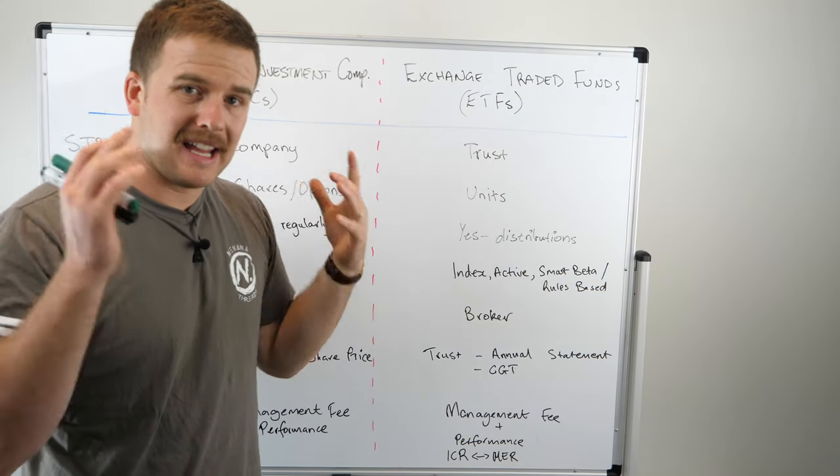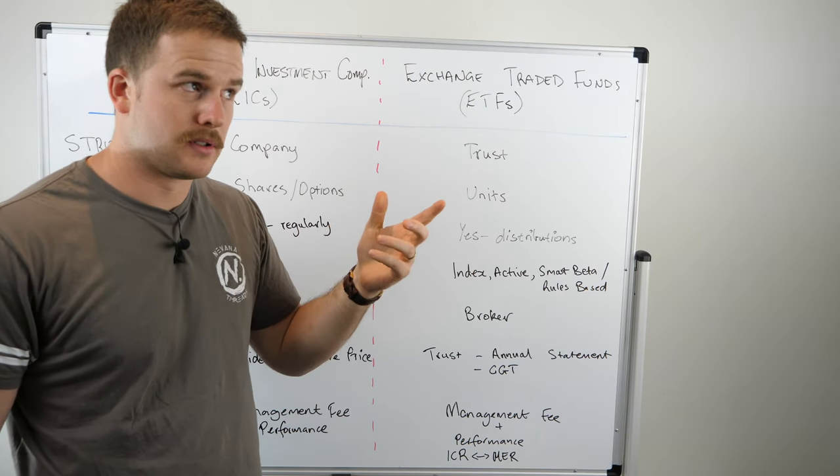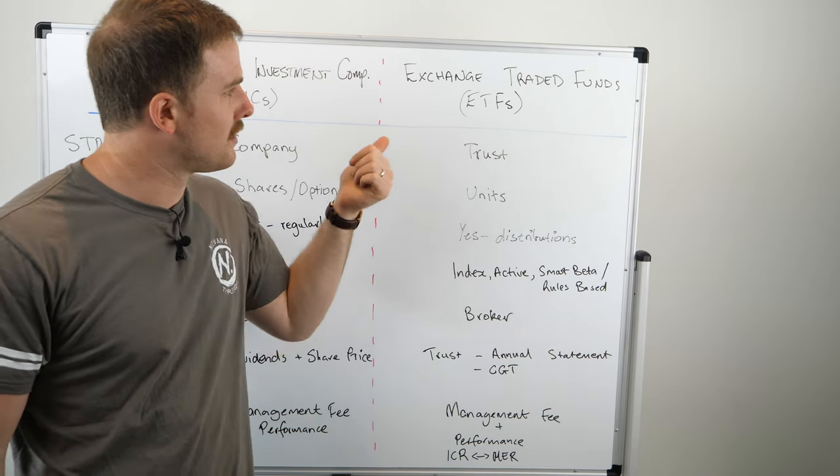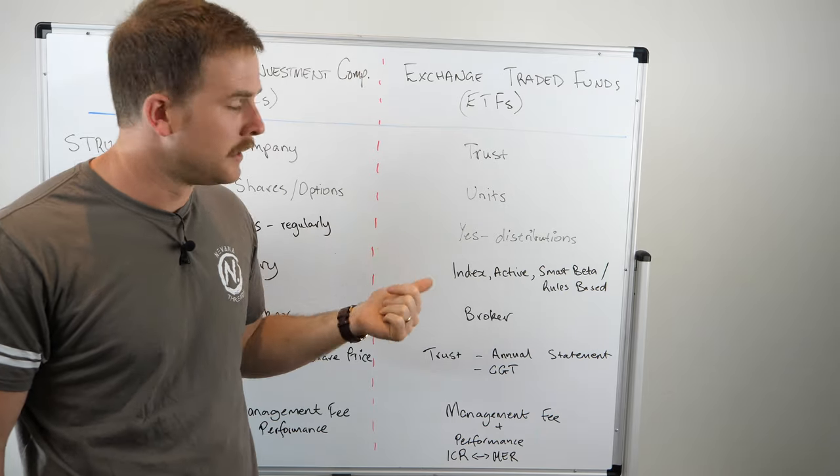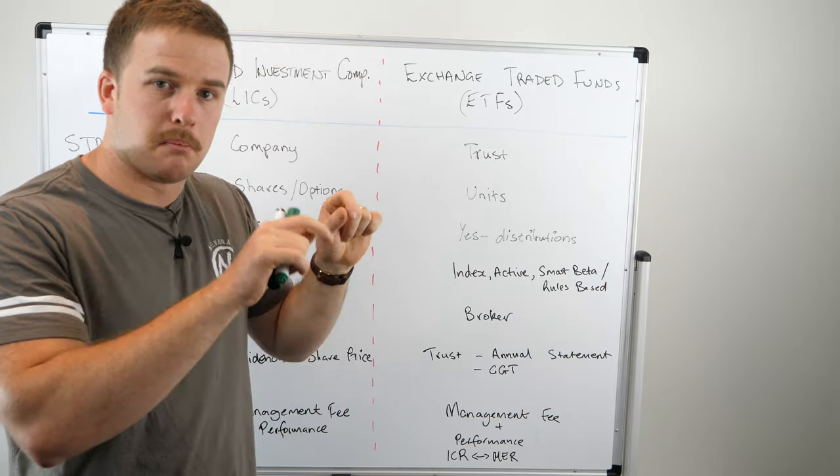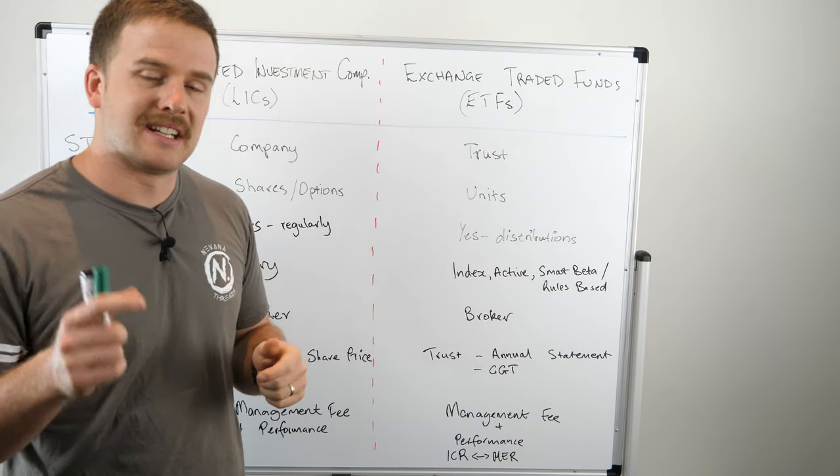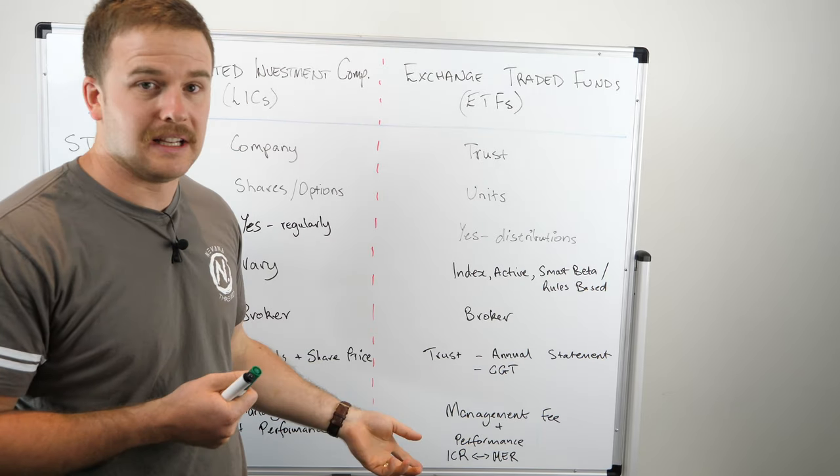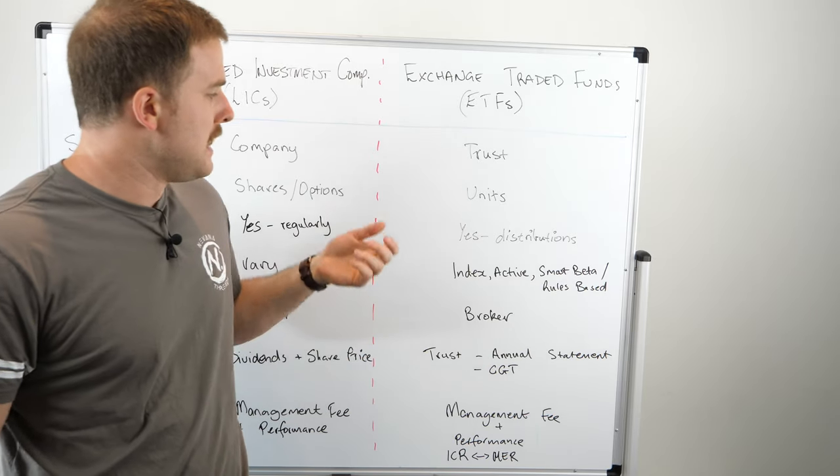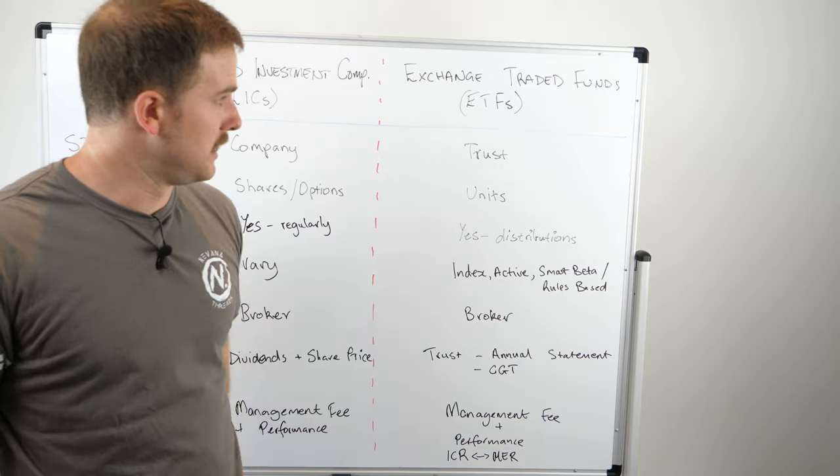If you're confused about any of this, you can go to the ETF's PDS or Product Disclosure Statement, which is on the ETF issuer's website. Just Google search for the ETF's name and then PDS and it should come up in a PDF. You should be able to download it and look at the different fees, the strategy of the ETF, the tax structure of the ETF, all different types of stuff that you would be looking to answer from any of this information here.